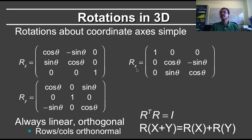Similarly, for rotation about the x-axis: 1, 0, 0, 1, 0, 0, cos minus sine, sine cos. For the y-axis, since y equals z cross x, it's a little different — the cos minus sine and cos are arranged differently — but it still has the same form. All of these cases are orthogonal; R transpose R is the identity. And even in 3D, because it's a matrix, it must follow that it's linear.